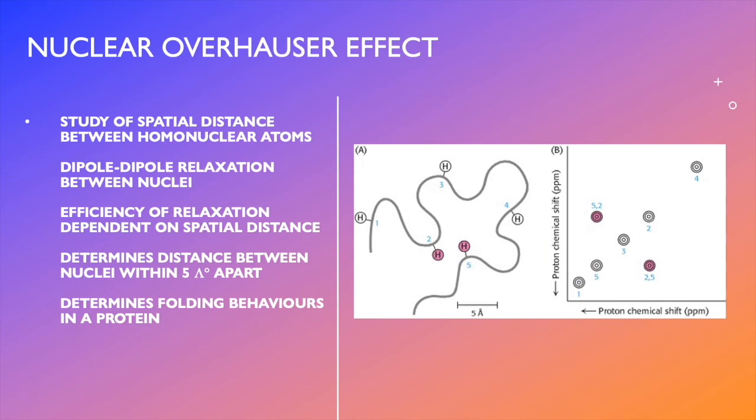Therefore, it can be said that the nuclear Overhauser effect depends on the change in intensity of one nucleus's resonance when the intensity of its neighboring nucleus's resonance is altered, meaning the smaller the distance between nuclei, the larger the change in intensity. From this, the folding behaviors within a protein can be determined.